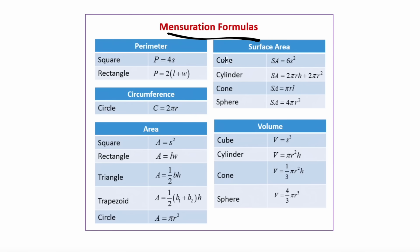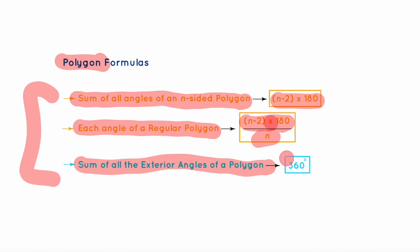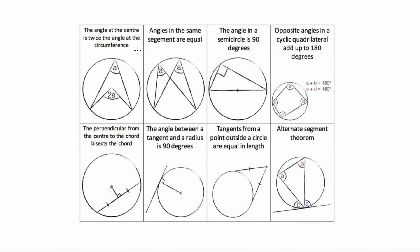For aspiration formulas, you can pause the screen and remember these formulas that you'll be needing them in your paper. For polygons, you need to know these three formulas: the sum of all angles of an n-sided polygon is n minus 2 times 180. Each angle of a regular polygon can be found by this formula: n minus 2 times 180 over n. The sum of all the exterior angles of a polygon must add up to 360 degrees.